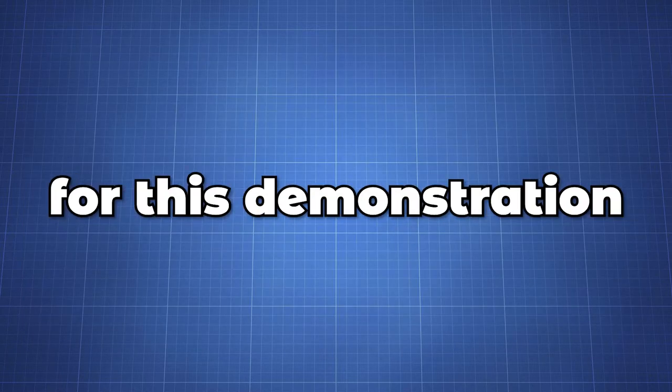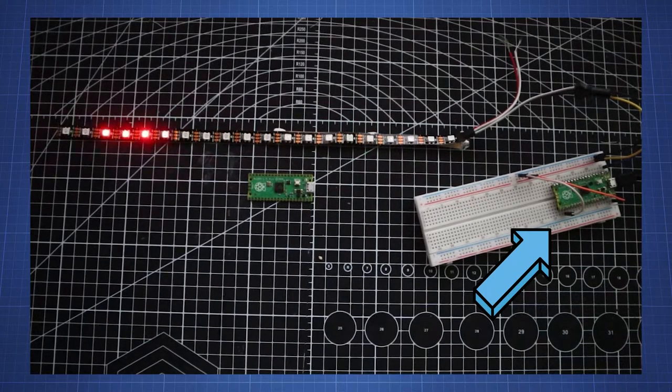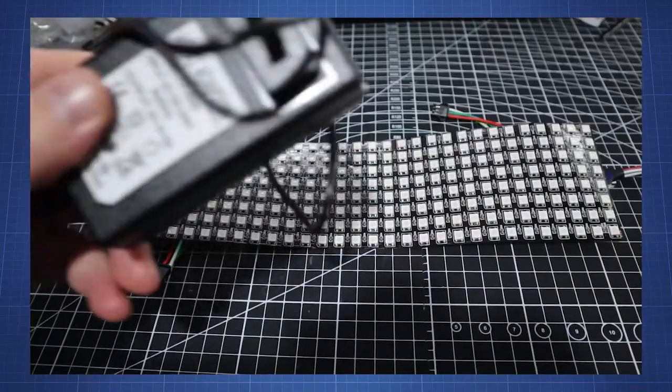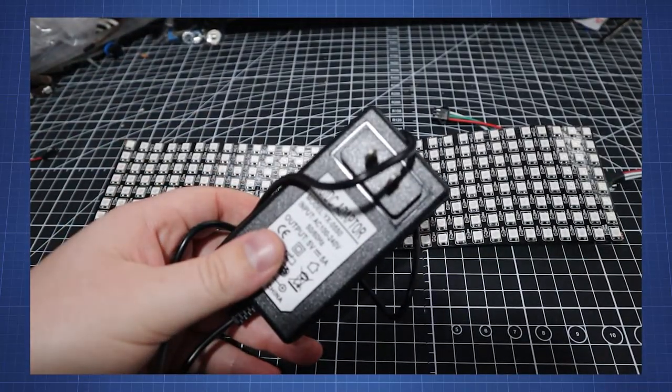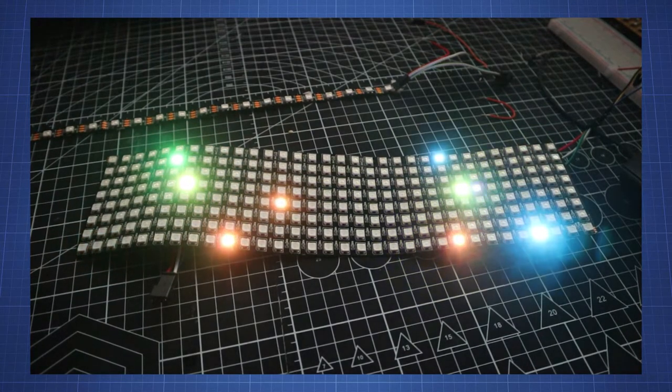Just one thing to note, for this demonstration we are only using a limited amount of LEDs so it is okay to power it through the Raspberry Pi Pico. If you are creating a project with many LEDs, always use a separate 5V power supply that can supply enough current to all your LED strips.